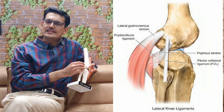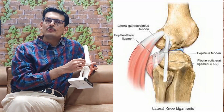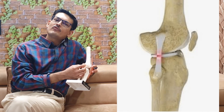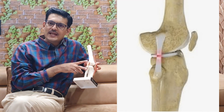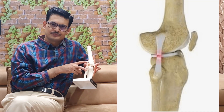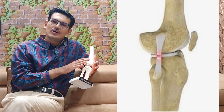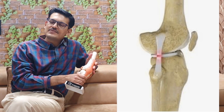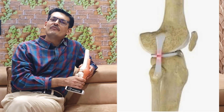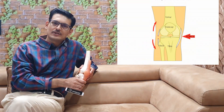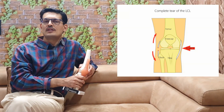The LCL is a tubular cord-like structure which is about 2 to 3 millimeters thick and about 4 to 5 millimeters wide, with a total length of about 6 to 7 centimeters. It provides stability to the knee against lateral opening. It is a very important structure in multi-ligamentous injuries and is very commonly torn in association with anterior cruciate ligament injuries.